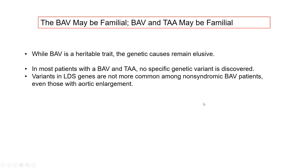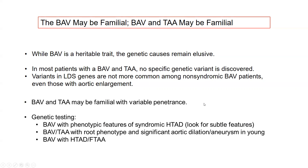When to consider genetic testing: BAV with phenotypic features of syndromic heritable thoracic disease — genetic testing can be useful. Look for subtle features. In patients with bicuspid valve and root phenotype aneurysms, significant aortic dilation or aneurysm in young individuals, consider genetic testing — as well as those with bicuspid valve and family histories of thoracic aneurysm disease.